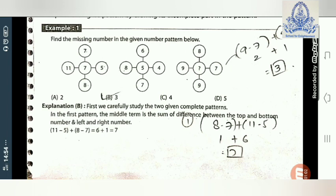Now see the third pattern: nine, eight, seven, and nine. Similarly, nine minus seven equals two, and nine minus eight equals one. Two plus one equals three. So the right option is three.